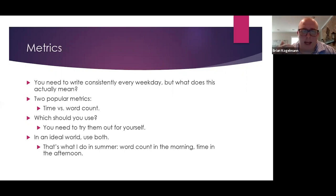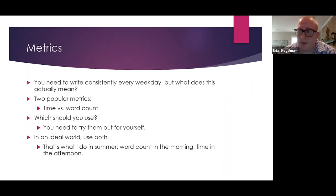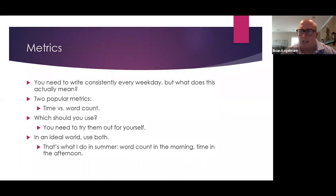In an ideal world, you're going to use both. In the summer, when I have more time to do my research, I do word counts in the morning and then time in the afternoon — two writing sessions a day. In the morning, I just want to get a thousand words on the page. They don't have to be very good, coherent, or even spelled right. That's my word count goal. Then in the afternoon, I set a time goal — two hours or an hour and a half — to sculpt what I did in the morning. The morning is like a machine gun: just get it out. The afternoon, we're sculptors trying to make those words into a coherent argument.